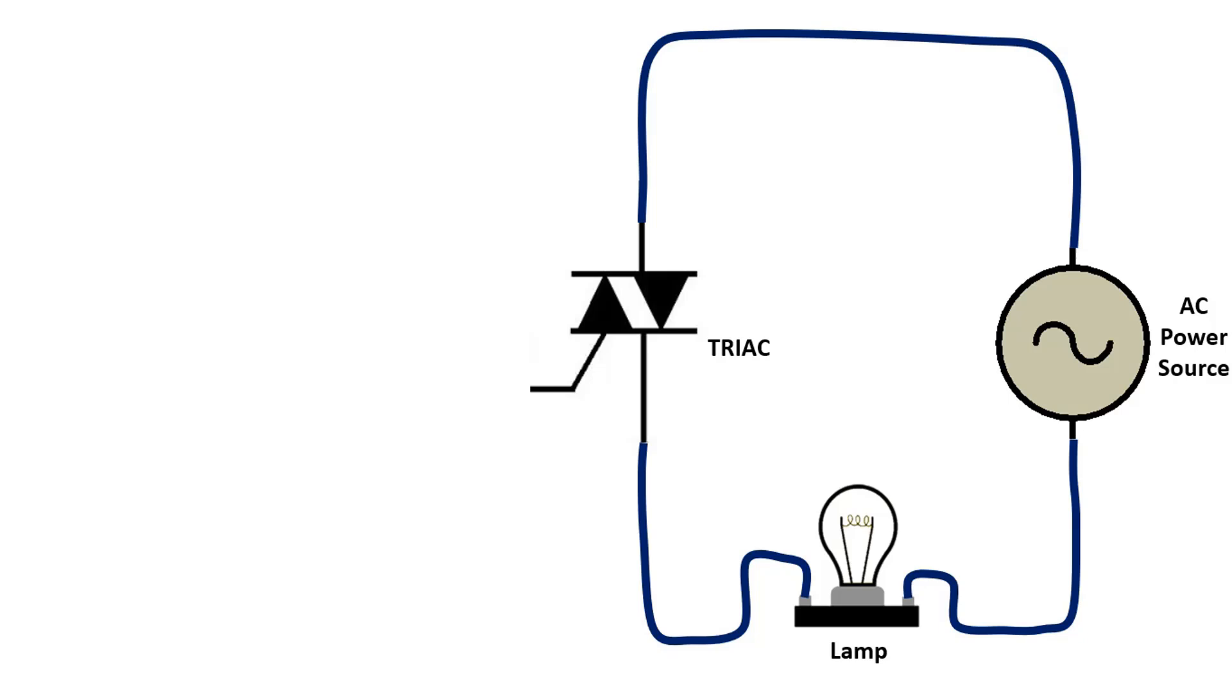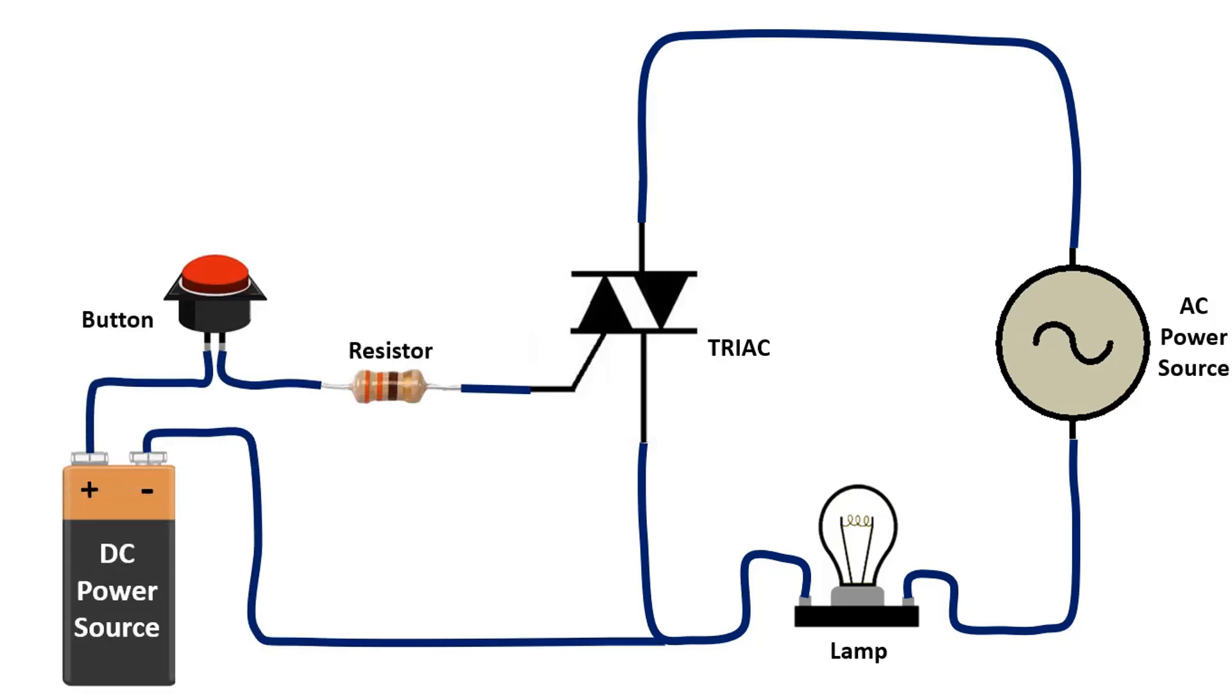For the TRIAC to trigger, a small trigger current must come from the gate end. By making such a connection to the gate end, we can trigger the TRIAC via a separate DC source that will light the lamp.